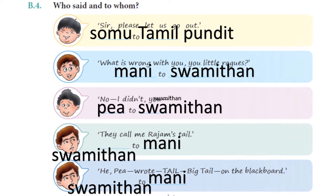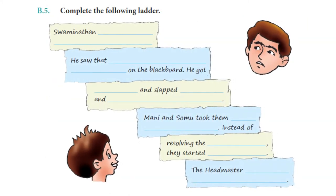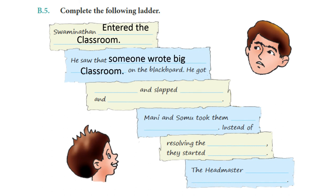Now let us solve B5. B5 is: complete the following ladder. Swaminathan entered the classroom and saw that someone had written a big letter stain on the blackboard. He got angry and slapped Pea and Shankar — both Pea and Shankar. So that's the answer. Mani and Somu took them away.